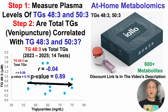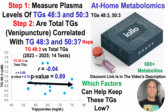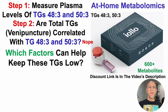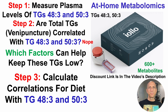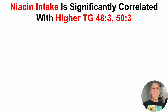To find factors that may help keep these triglycerides low, I calculated correlations for diet with each of the two triglycerides. Since 2015, I've weighed almost all of my food — more than 99% measured with a food scale — entered into Cronometer, and correlated with blood tests. Looking at that data, niacin intake is significantly correlated with higher levels of TG48-3 and TG53.